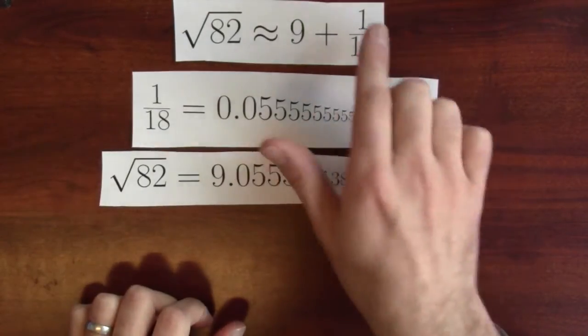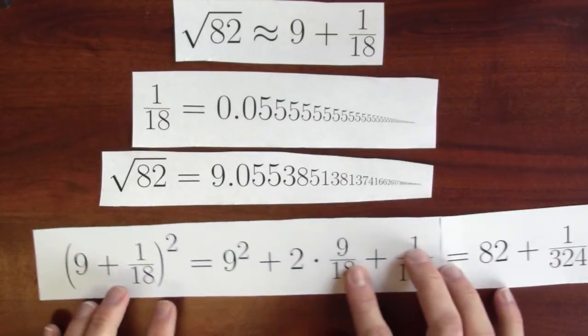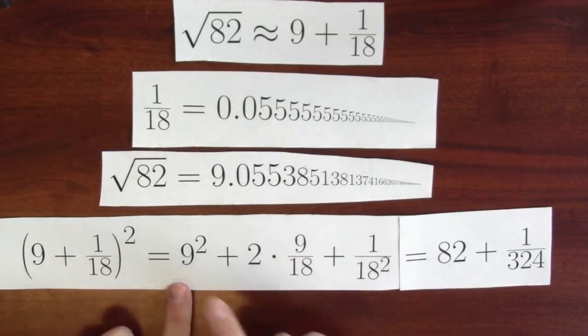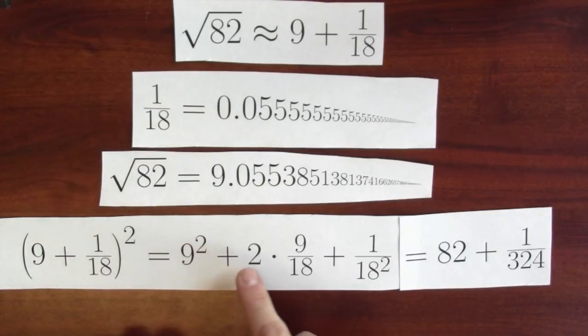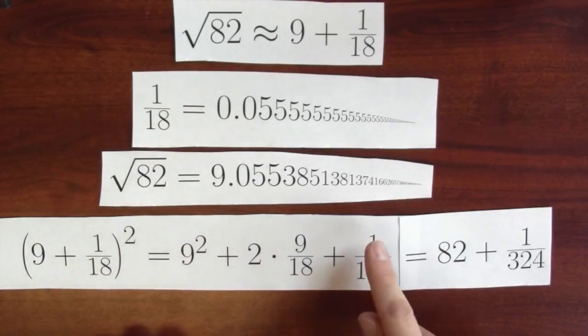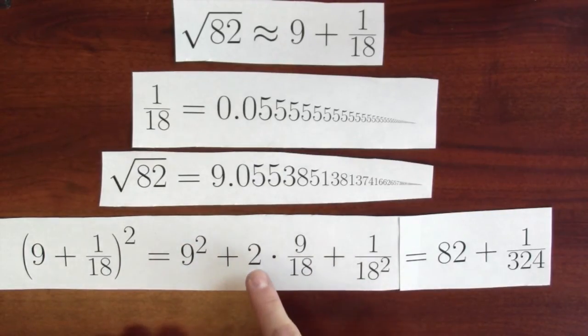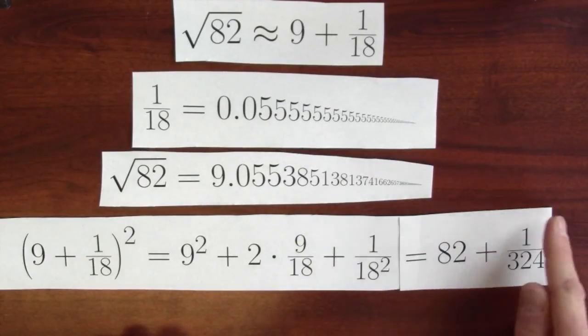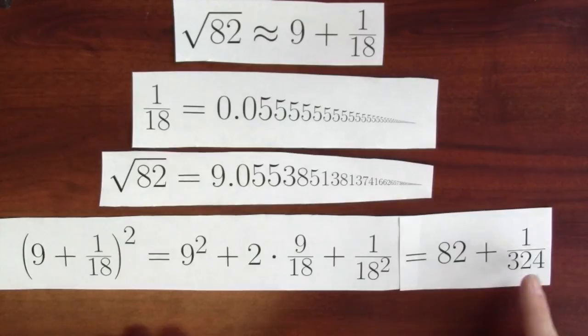Another way to see that this isn't such a bad guess is just to take 9 plus 1 18th and square it. When I square 9 plus 1 18th, I get 9 squared plus 2 times 9 18th plus 1 over 18 squared. 2 times 1 half is 1. This is 81 plus 1 is 82. And 1 over 18 squared is the very small number 1 over 324.